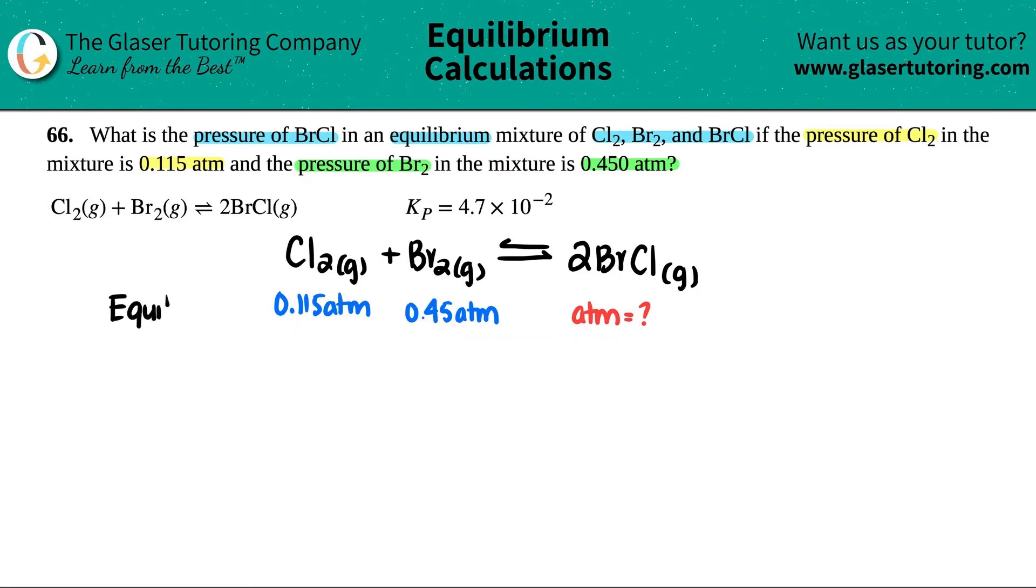This is super important because when we do our Kp expression, only equilibrium values are allowed. They gave us the Kp number but we don't have a formula.